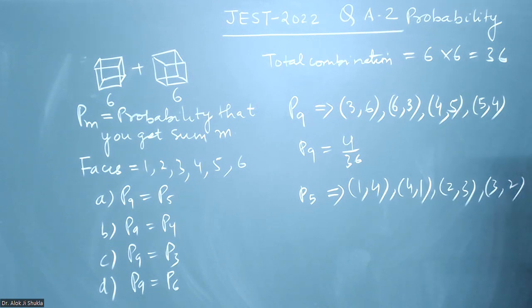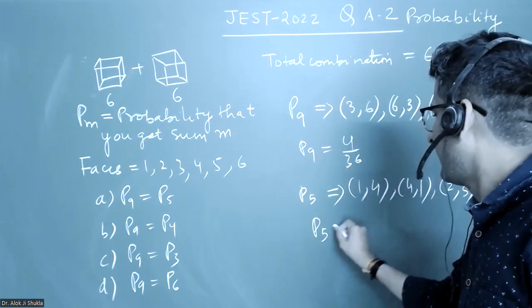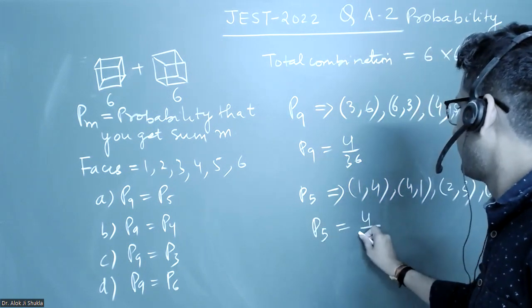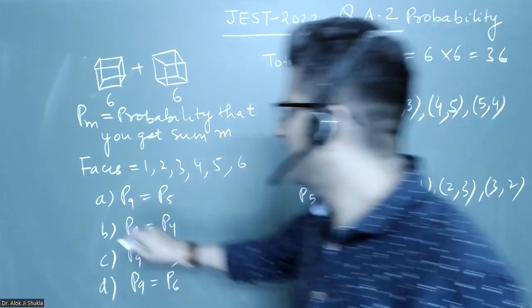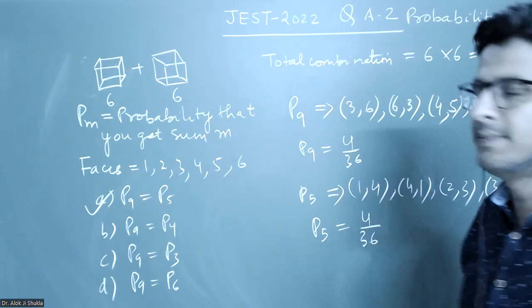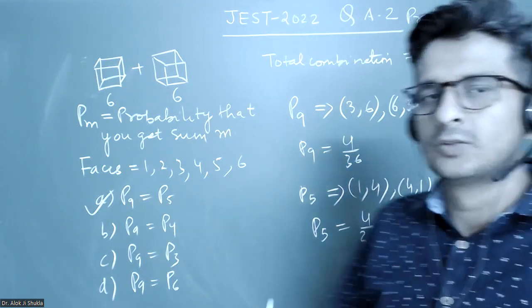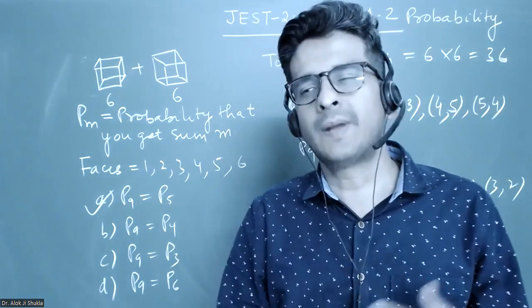So the probability to get 5 is also 4/36, which means option A is correct: P(9) equals P(5). From probability, they sometimes give very basic questions where a lot of depth is not required.